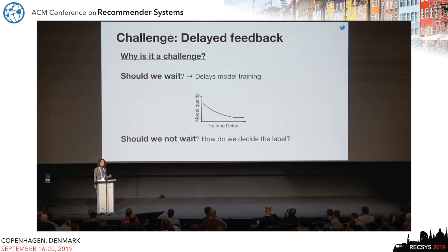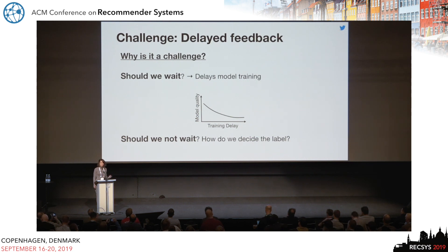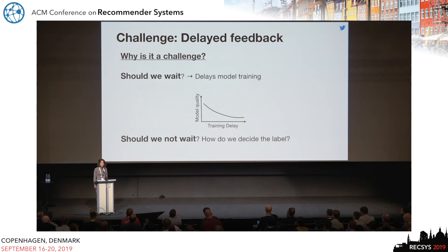Why is this a challenge? Because we need to choose whether we wait until the ground truth label becomes available. But in this case, we risk deteriorating the model quality, as you can see in this plot, since the longer we wait until we refresh our models, the worse the model quality gets. On the other hand, if we don't wait until the ground truth labels and apply a continuous training framework, then we need to decide on the label.